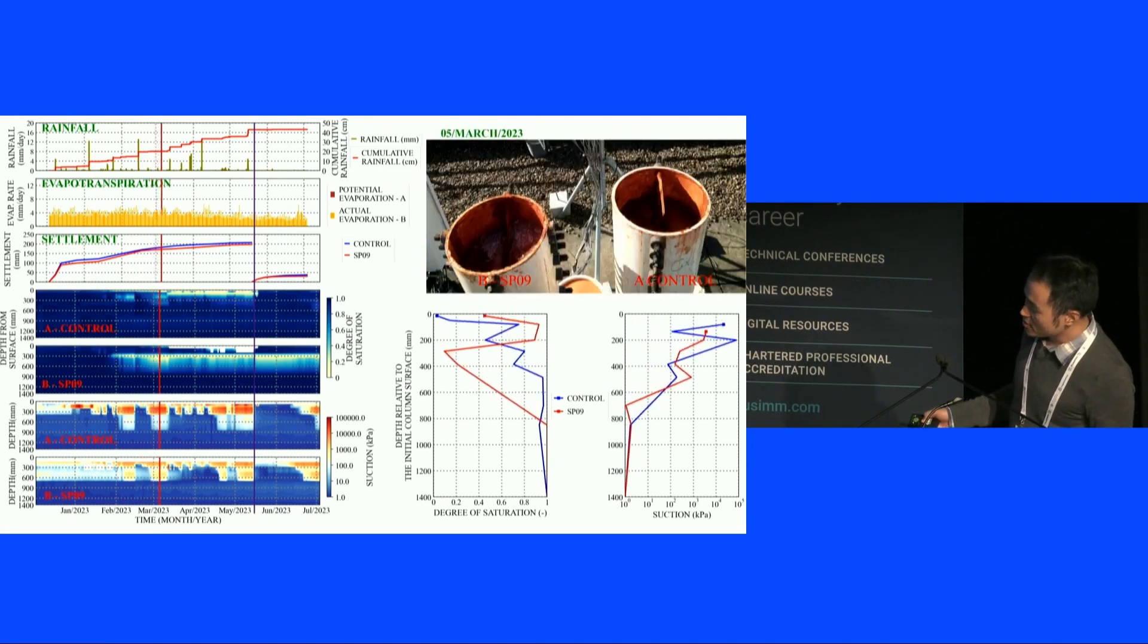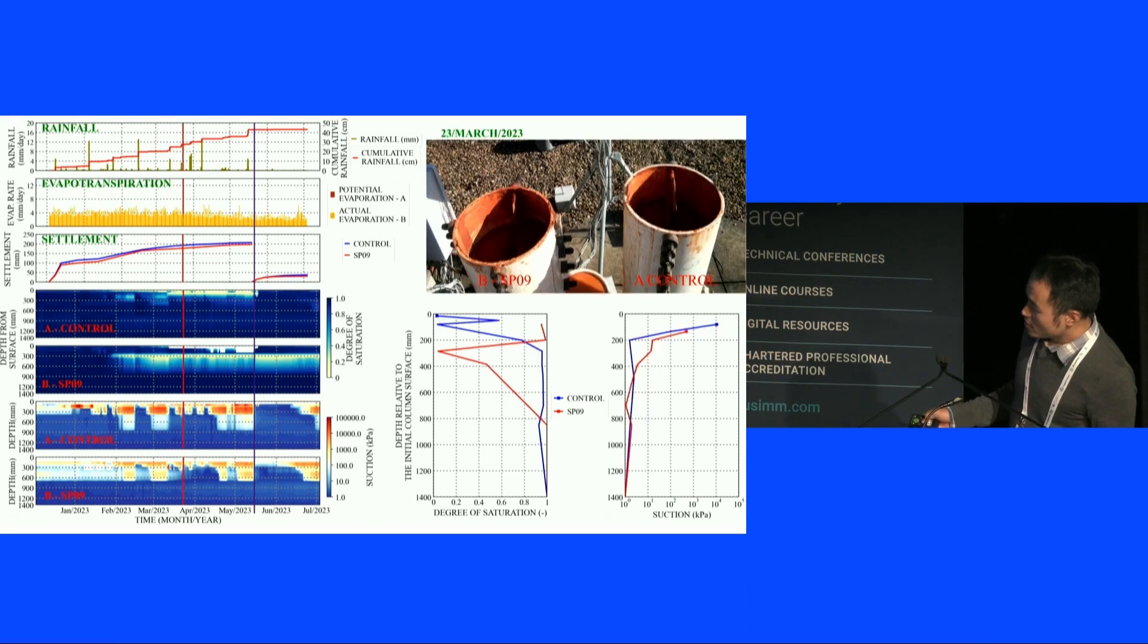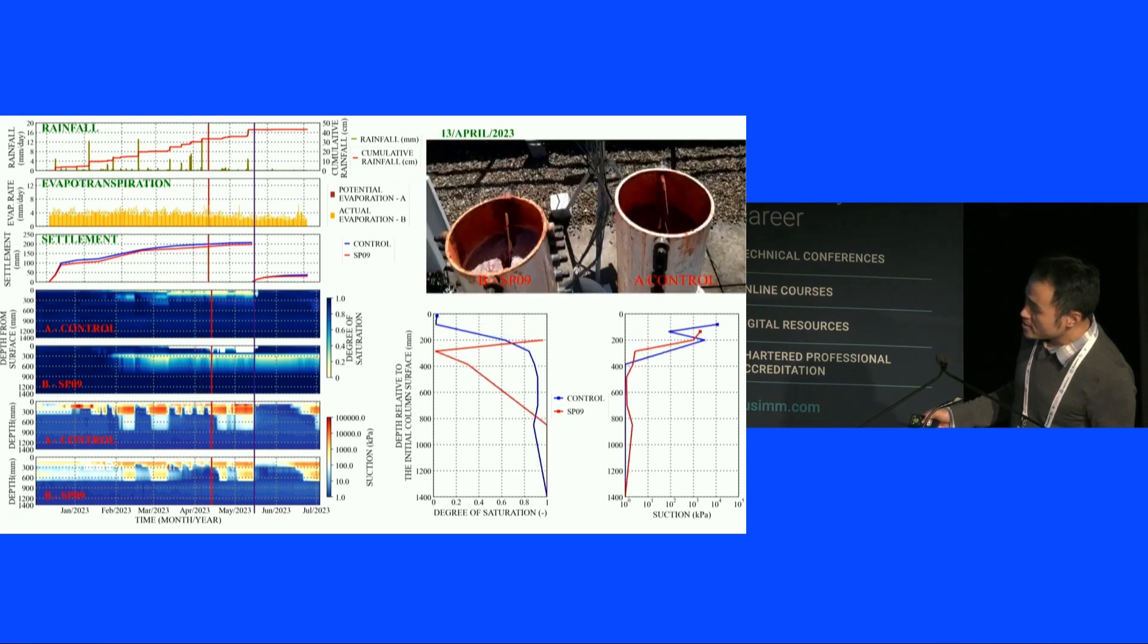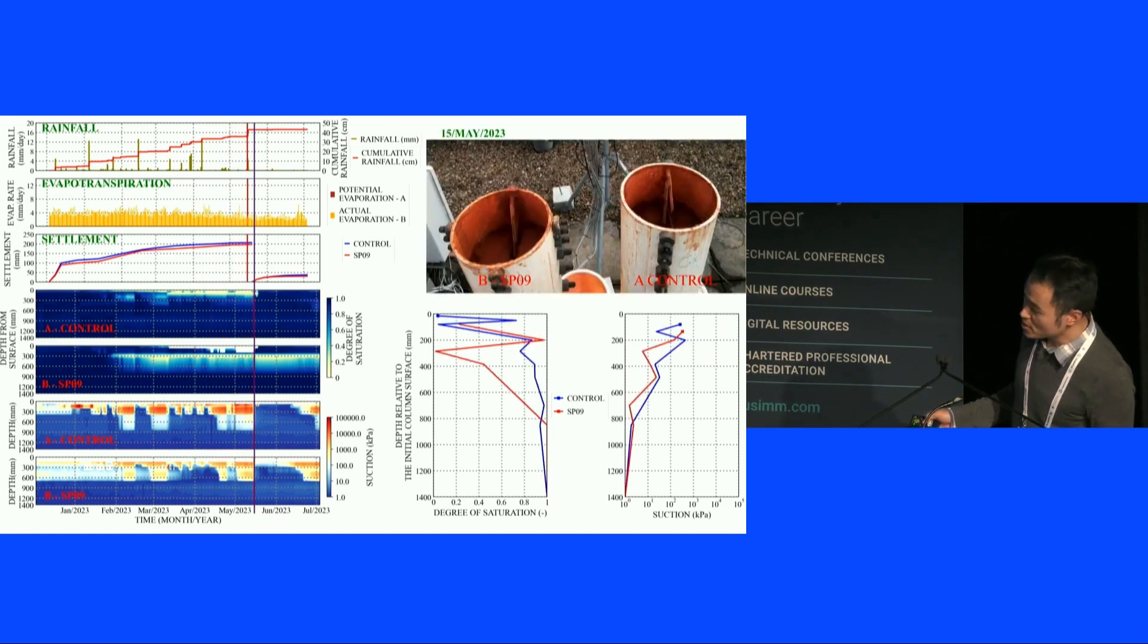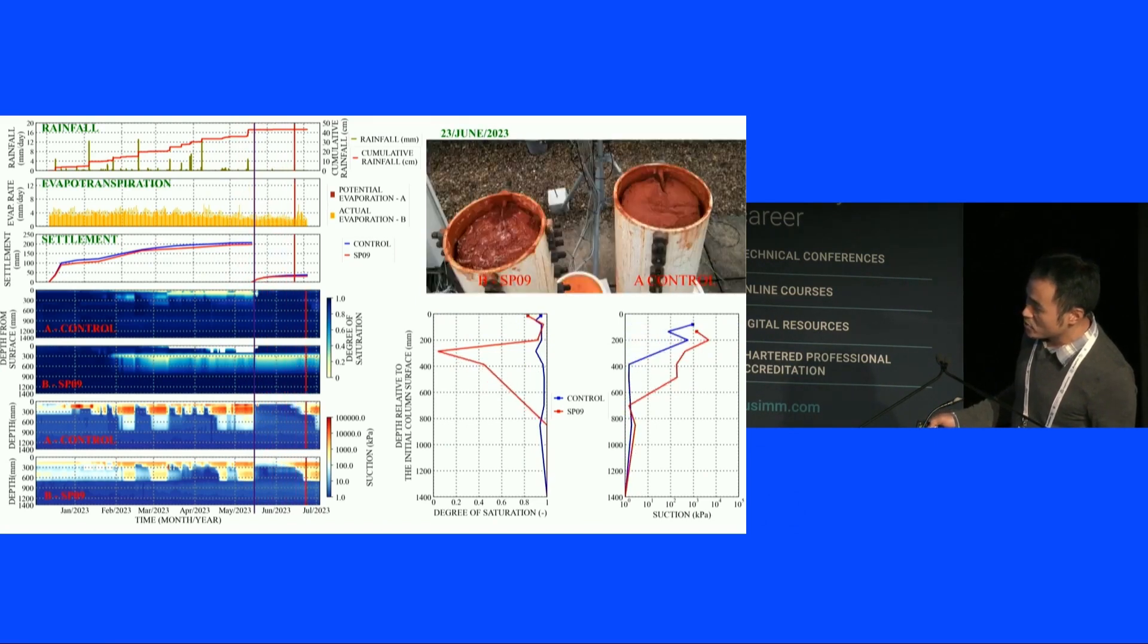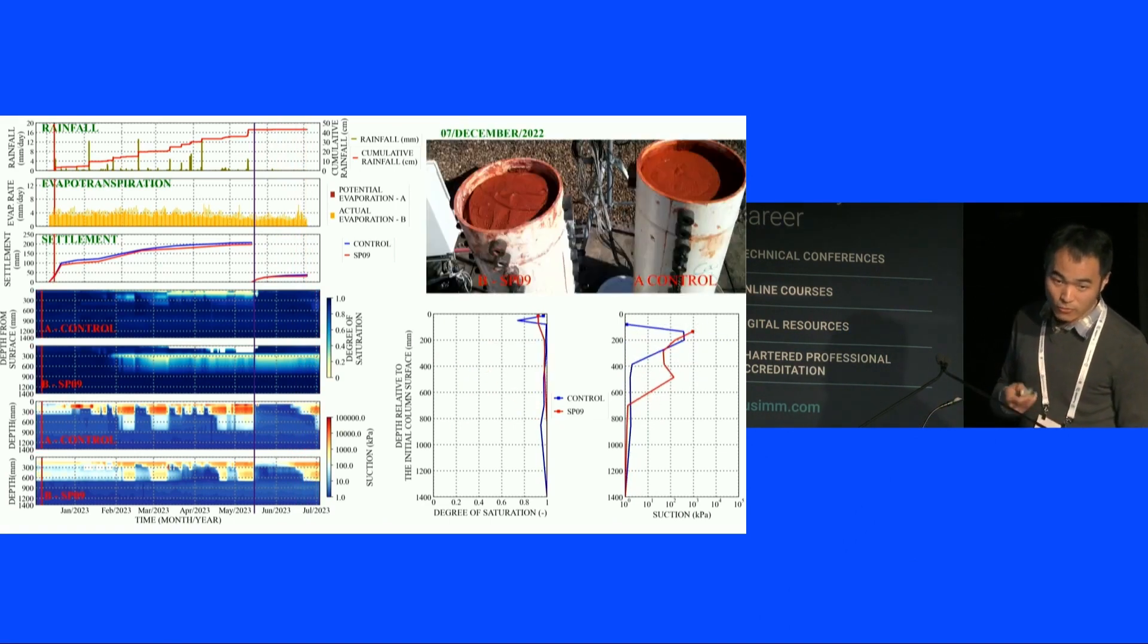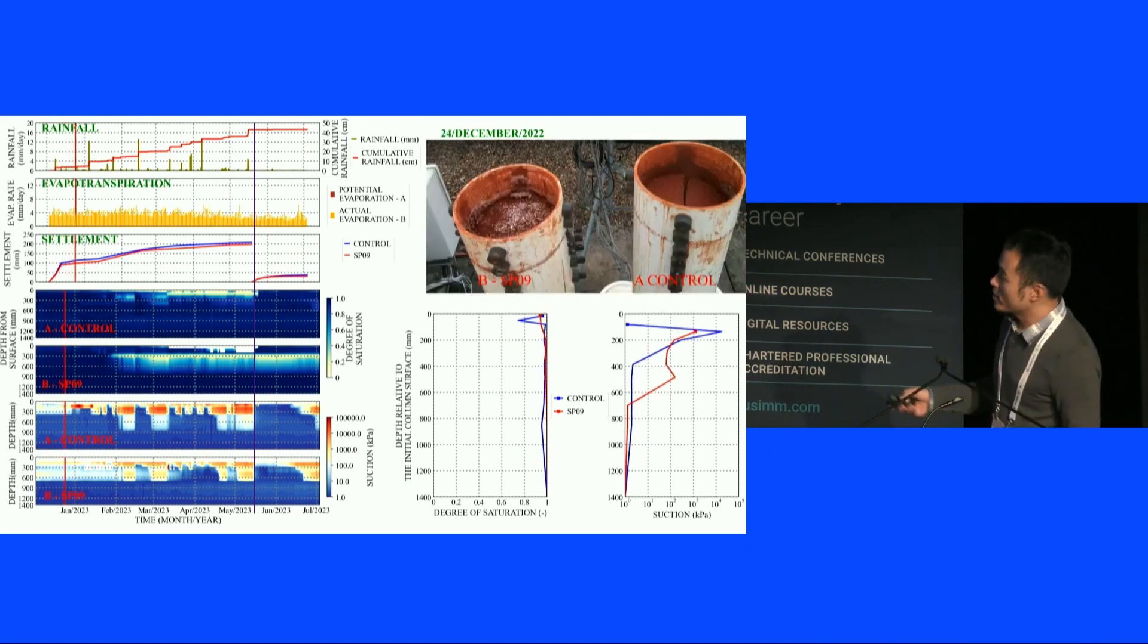The suction basically tells a very similar story. If it's blue, that means it's low suction. If it's red, it means high suction. As we can see, the drying for the control sample is only taking place near the surface. So the unsaturated zone is about 300 millimeters. But if we look at the treated sample, the thickness can go 600 millimeters. So again, it's an indication of stronger capillary forces.